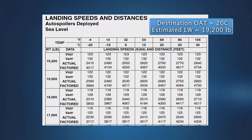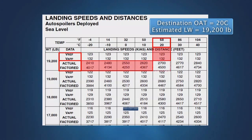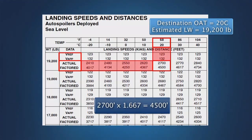Landing distance data published in the airplane flight manual varies widely between airplane manufacturers. Some manufacturers furnish the landing distances determined during certification, in which case pilots are expected to apply the appropriate multiplier — 1.667 or 1.25 — while others furnish the factored landing distance data for use in complying with the operating rules. Some manufacturers provide both the certified and factored landing distances. A few manufacturers do not provide landing distance data at all, but rather provide data on the maximum allowable landing weight as a function of landing distance available.